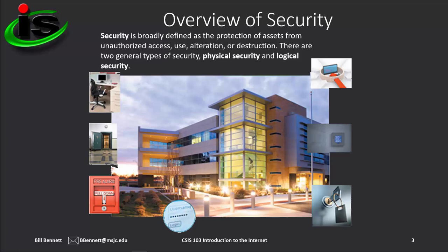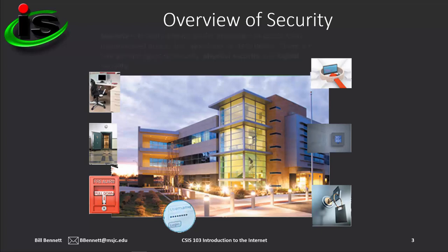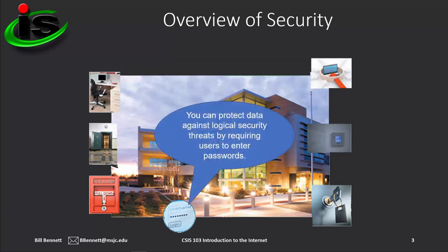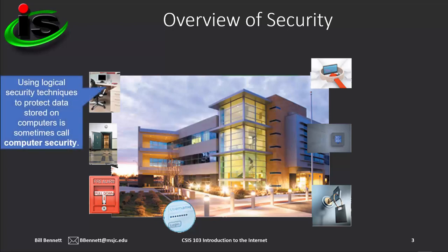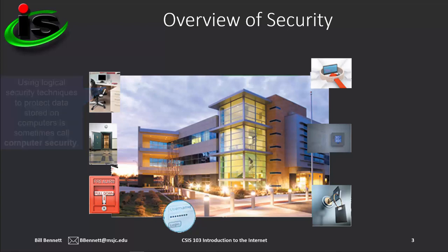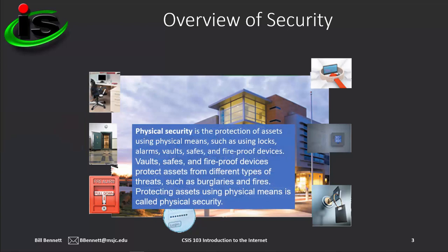This visual overview will explain some of the devices that provide two types of security to different assets. Logical security is the protection of assets using non-physical means, such as requiring the use of passwords. Using logical security techniques to protect data stored on computers is sometimes called computer security. Physical security is the protection of assets using physical means, such as using locks, alarms, vaults, safes, and fireproof devices.